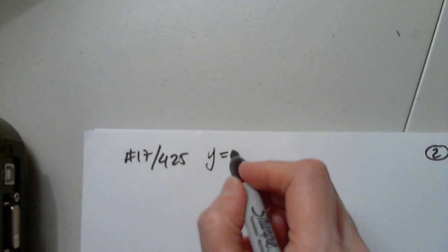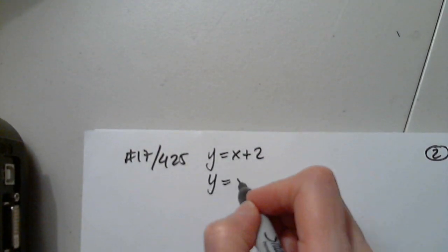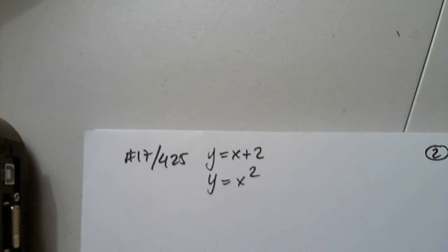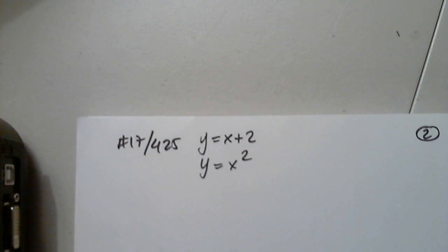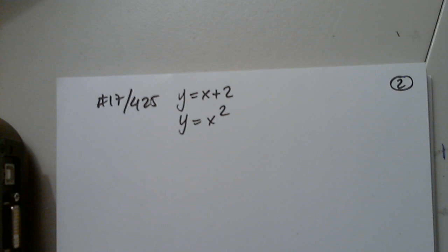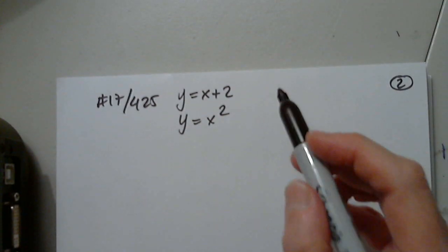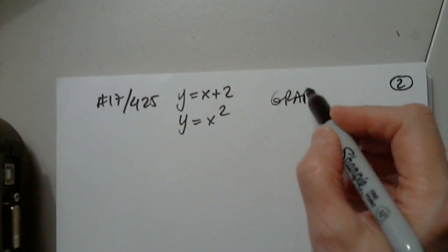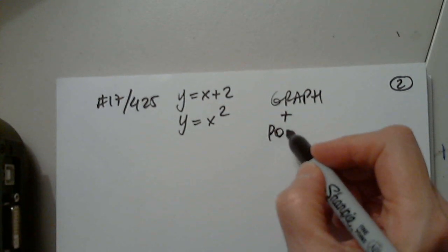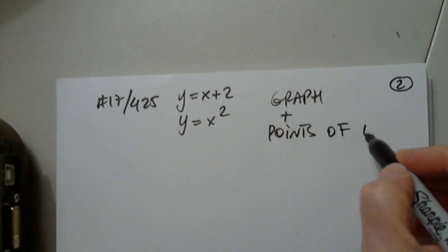Find the area of the region bounded by the graphs, and I selected this one. So, y equals x plus 2, and y equals x squared. First of all, we have to graph the functions, and we have to find points of intersection.